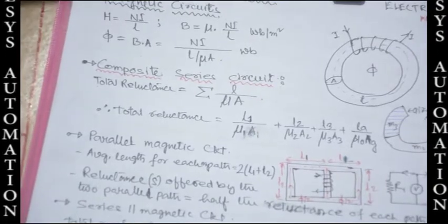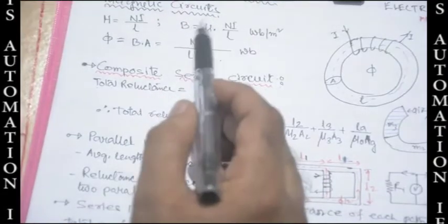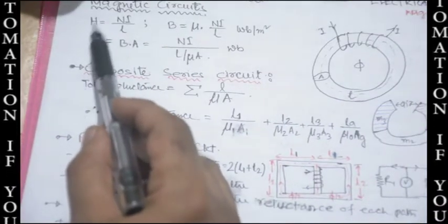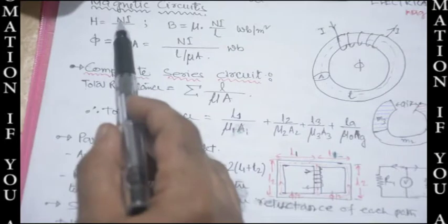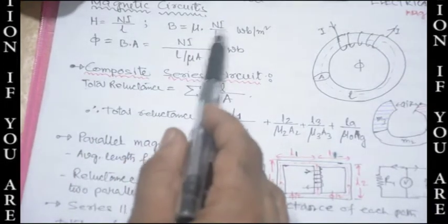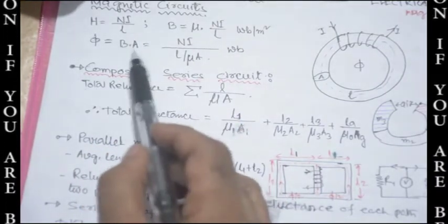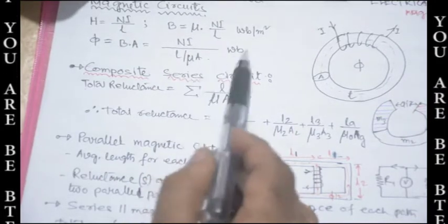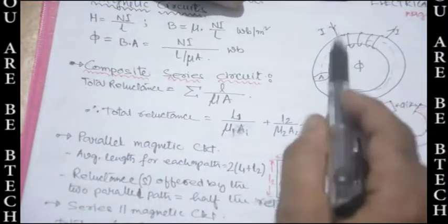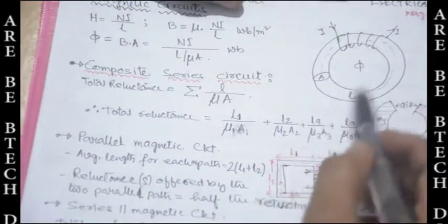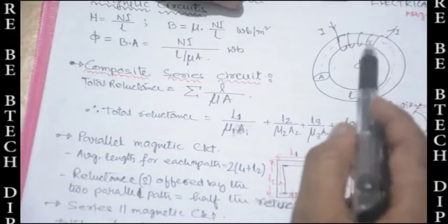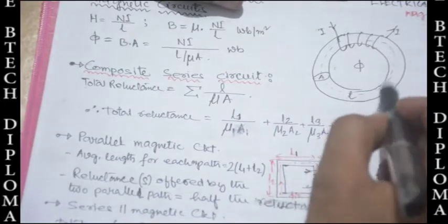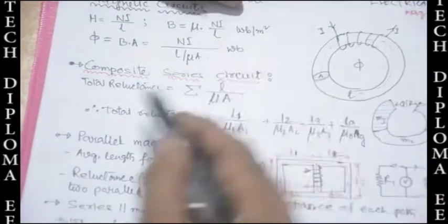Magnetic circuits: H is the magnetic field intensity given by NI / L. So B = μH = μNI / L, and phi = B · A = μNIA / L. Consider a core with a coil — flux flows through this core. We consider the total length L and area A of the core.